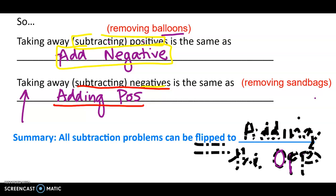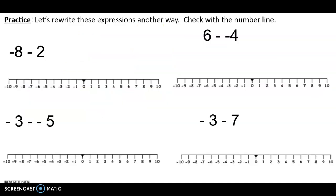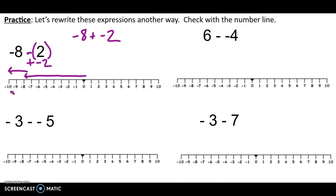So we saw that works with Mr. Frog. Let's do a few problems. These are all subtraction problems — the directions say to rewrite them another way. So let's rewrite as adding the opposite. Instead of saying negative 8 minus 2, I'm going to add the opposite — add negative 2. So negative 8 plus negative 2. Then I'm going to do it on the number line: negative 8 and negative 2 takes me right to negative 10.